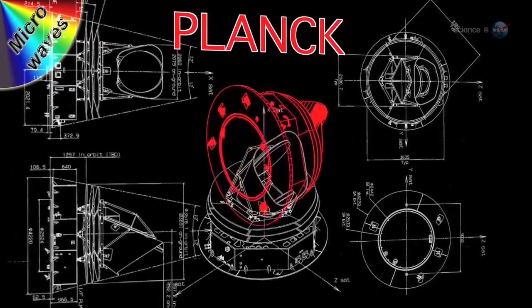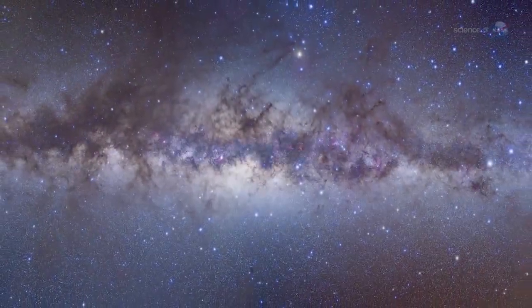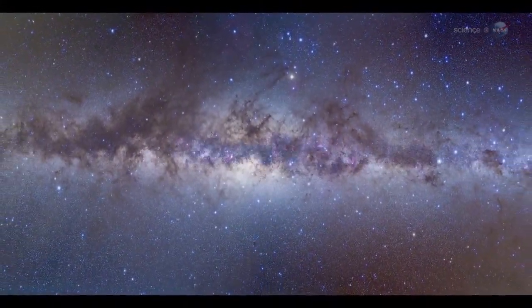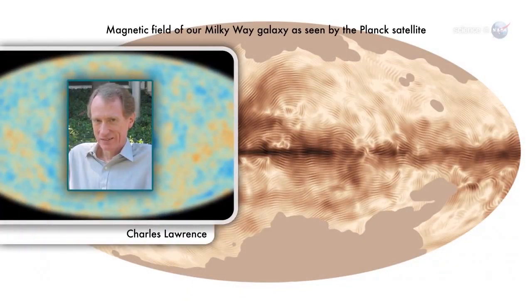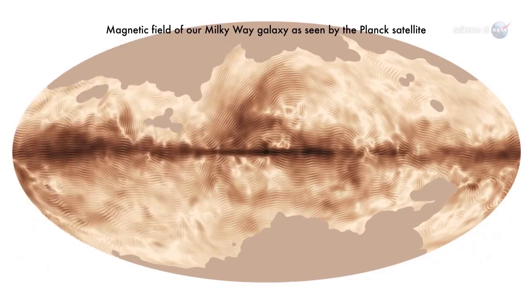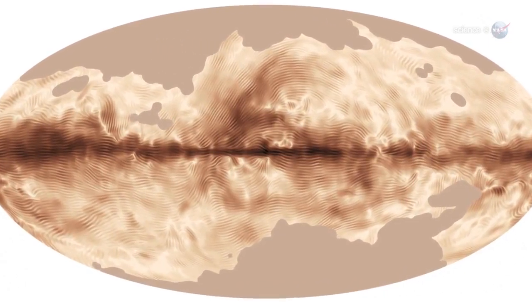Researchers working with data from the European Space Agency's Planck spacecraft have mapped the magnetic field of the entire galaxy. The Milky Way's magnetic field stretches across more than 100,000 light-years, says Charles Lawrence, the U.S. Planck project scientist at NASA's Jet Propulsion Laboratory. And Planck has done a magnificent job mapping its structure.